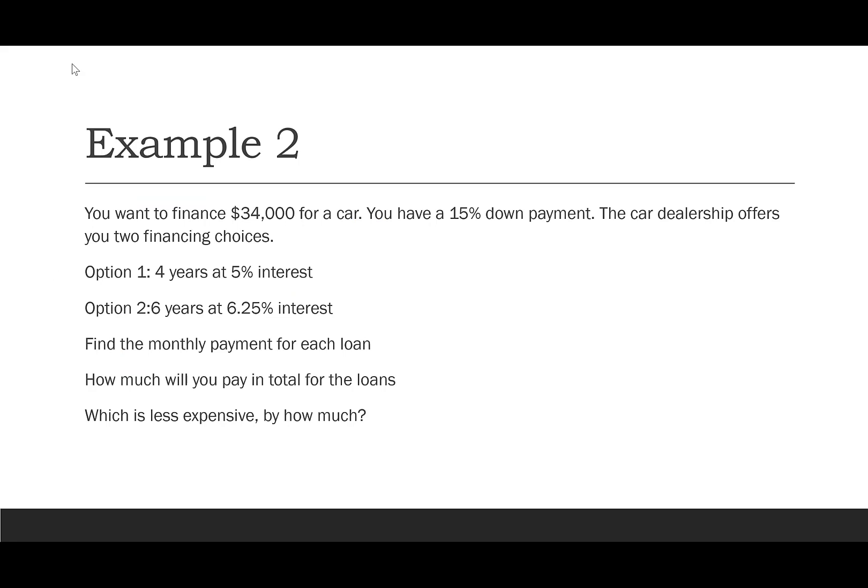Now that we have the financial calculator as our tool, we'll use it as our main strategy. You just need to know what pieces to input — the same approach used at banks. Let's say we want to finance a $34,000 car with a 15% down payment. The dealership offers two choices: four years at 5% interest, or six years at 6.25% interest.